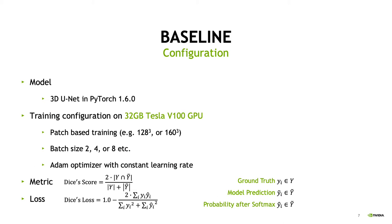Here is the configuration we are using to train 3D U-Net. All our experiments are conducted in PyTorch 1.6.0 on a 32GB Tesla V100 GPU. Because medical images normally have very large image sizes, we choose patch-based training, where we crop cubes from the raw image. The cube size could be 128³ or 160³ to form the mini-batch, with mini-batch size of 2, 4, 8, or more. The optimizer is Adam, and the learning rate is constant. To measure accuracy, we use the Dice score, which measures the overlap between ground truth and prediction, and the Dice loss is a modification of the Dice score with probability after softmax.